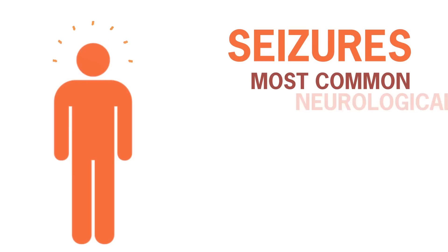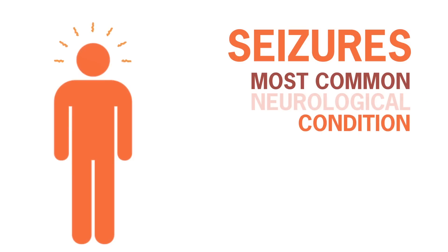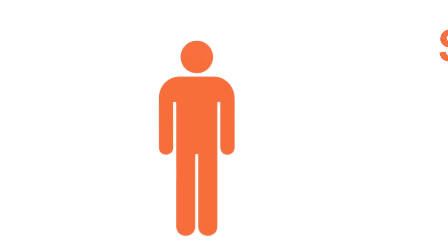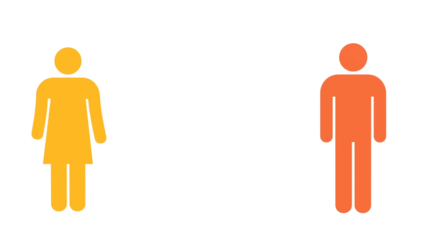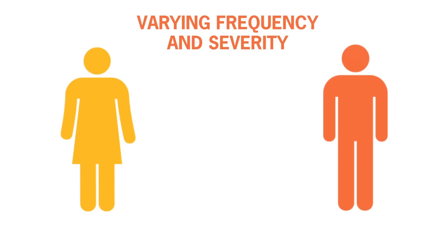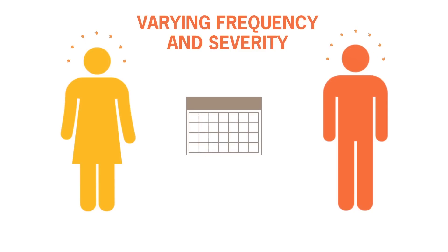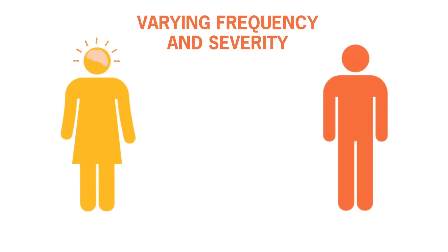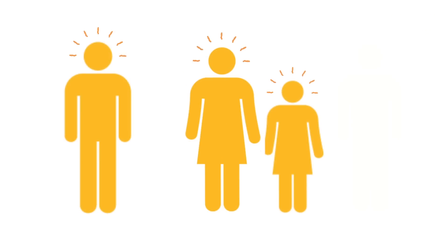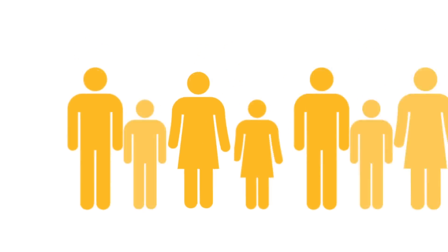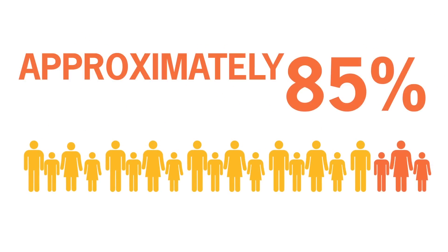Seizures are the most common neurological condition associated with tuberous sclerosis complex and vary greatly from person to person. People with TSC and seizures often experience varying frequency and severity, with some people becoming seizure-free over time and others continuing to have difficulty with seizure control. Approximately 85% of individuals with TSC are affected by epilepsy at some point in their lives.